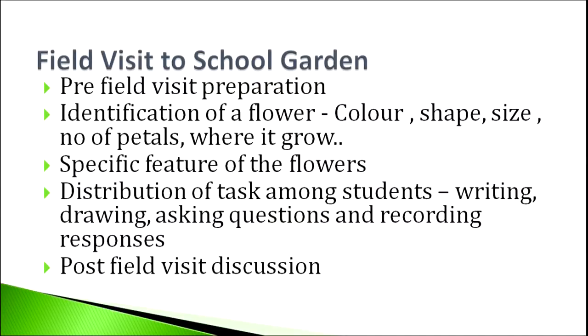From planning to evaluation is the process of the field visit method used in primary classrooms. Let's take some examples. For a field visit to a school garden, in the pre-visit field preparation you need to see what kinds of flowers are there. Children should be given instructions about observing flowers — what to observe: their colour, shape, size, number of petals, and where the flower grows, whether on a plant or shrub. They are expected to observe different aspects of a flower.